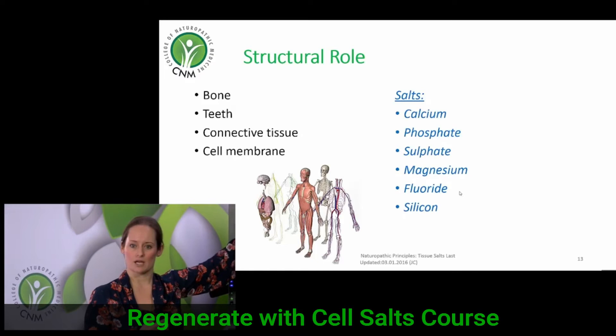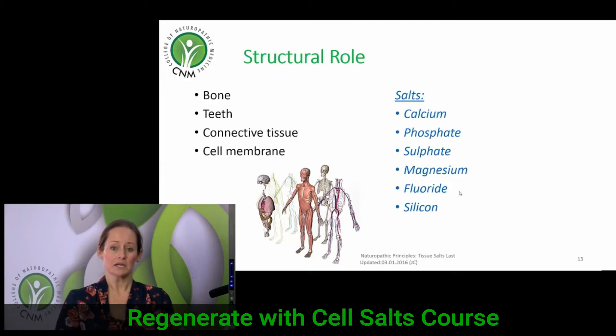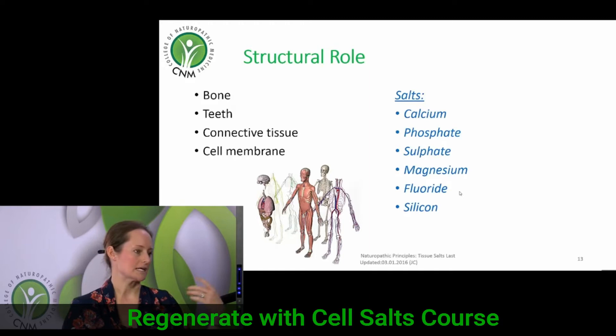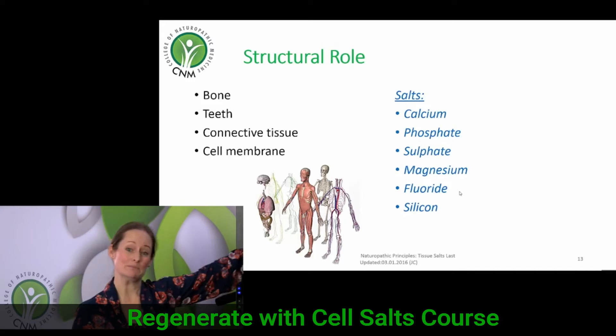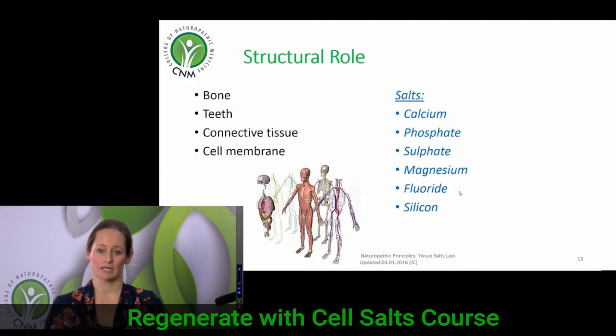Connective tissue is the tissue that connects everything to each other. This involves things like tendons, ligaments, and adipose tissue. Connective tissue can even be blood — although blood is liquid, it is a type of connective tissue. It connects various organs and tissues to each other.